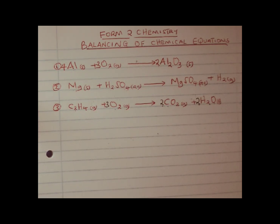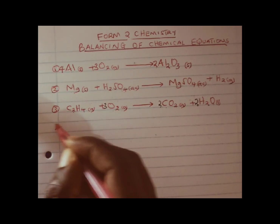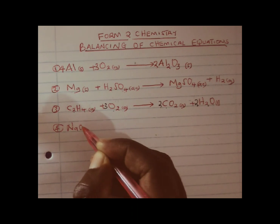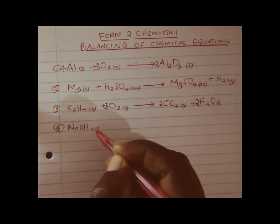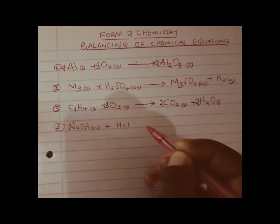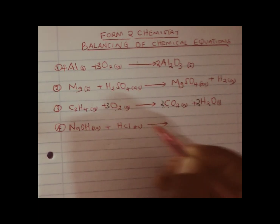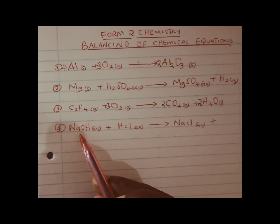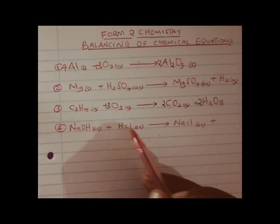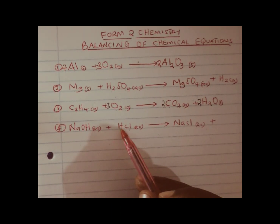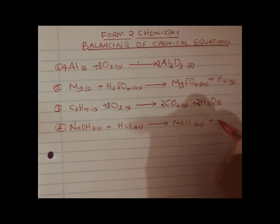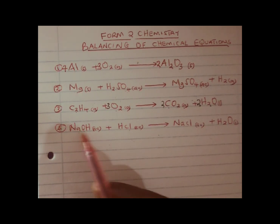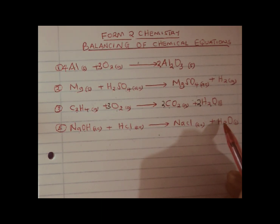Let us go to another example — example number 4. Let me react a base and an acid. For example, sodium hydroxide solution reacting with dilute hydrochloric acid. Sodium will come and combine with chlorine so that we get sodium chloride, which is a common salt. Remember, the reaction between a base and an acid will give us salt and water — after sodium combines with chlorine, we remain with hydrogen and hydroxide ions, which combine to give us water. This kind of reaction is known as neutralization.